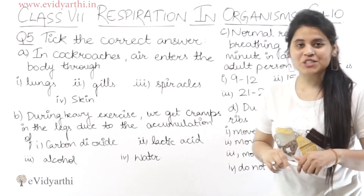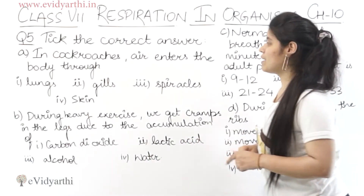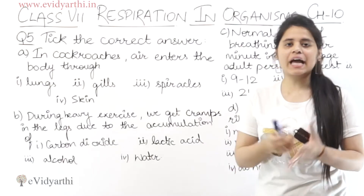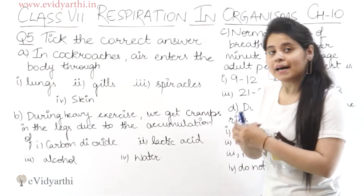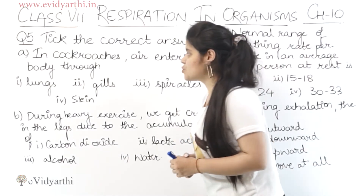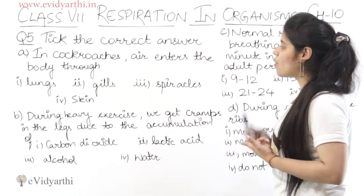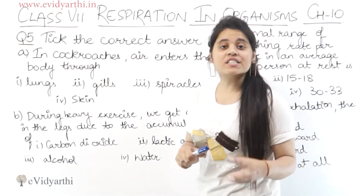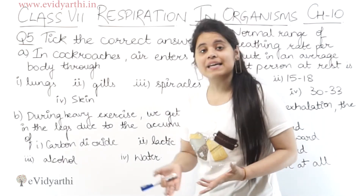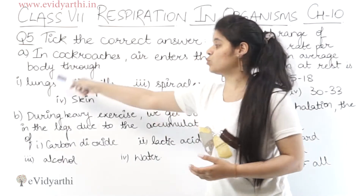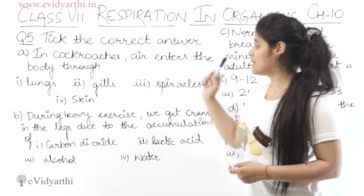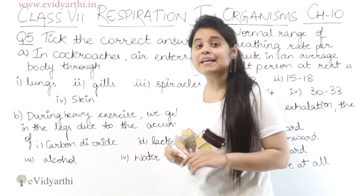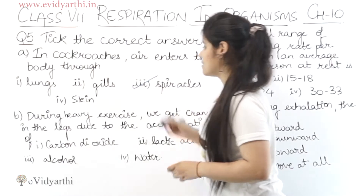Now coming to the next question, which is question number 5. Choose the correct answer from the given options. The first one is: in cockroaches, air enters the body through — lungs, gills, spiracles, or skin. So the correct answer is spiracles.